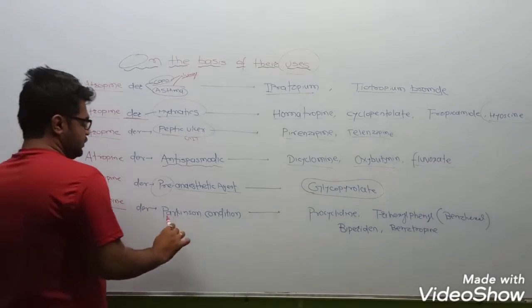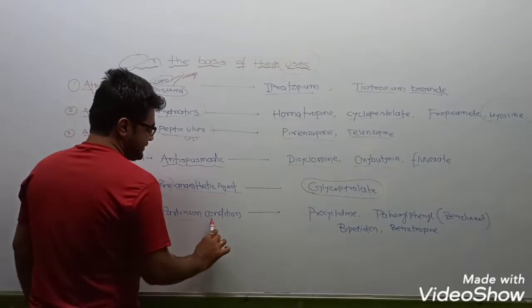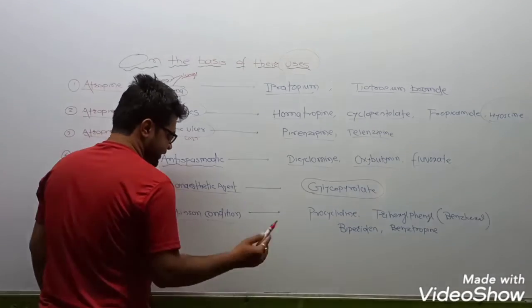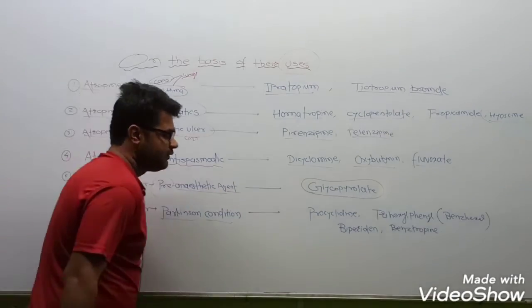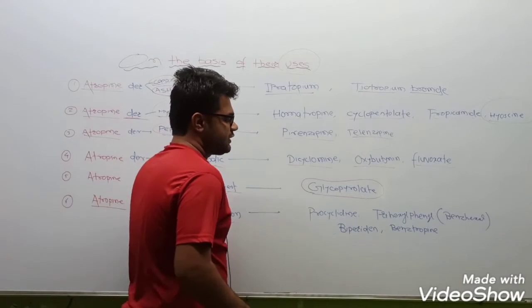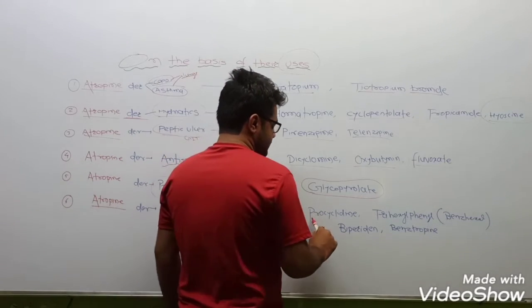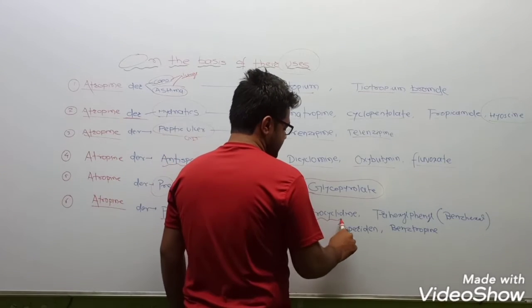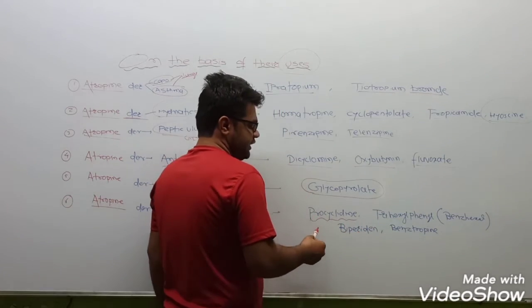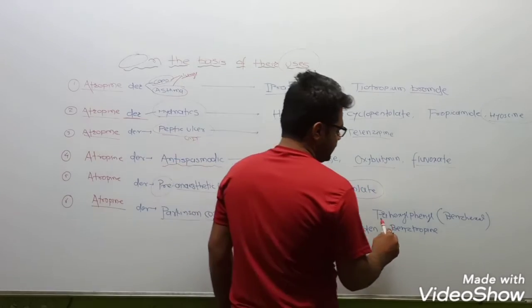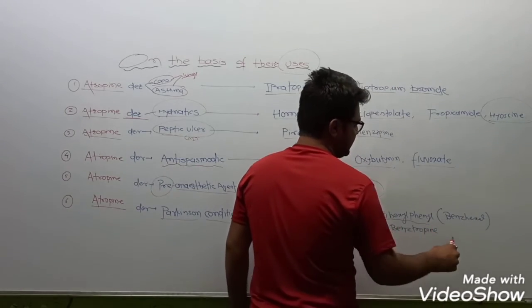Atropine derivatives which are used in Parkinson's condition. The drugs include procyclidine and trihexyphenidyl.